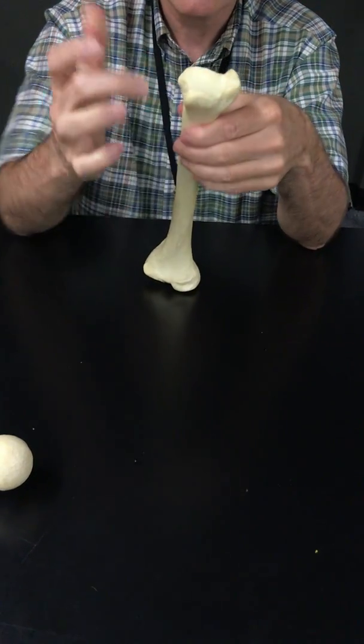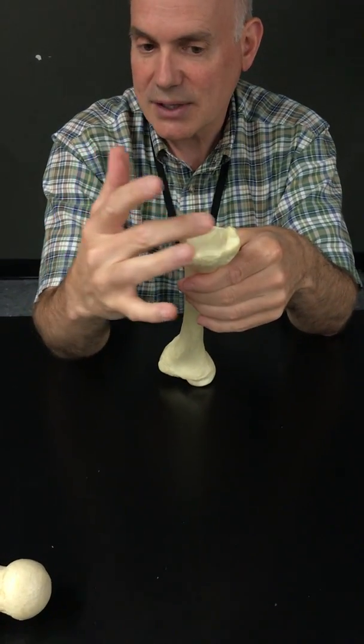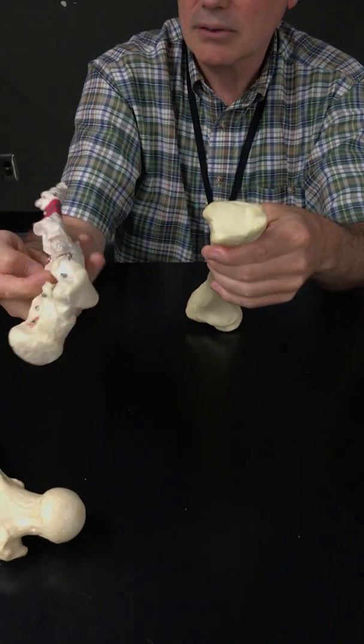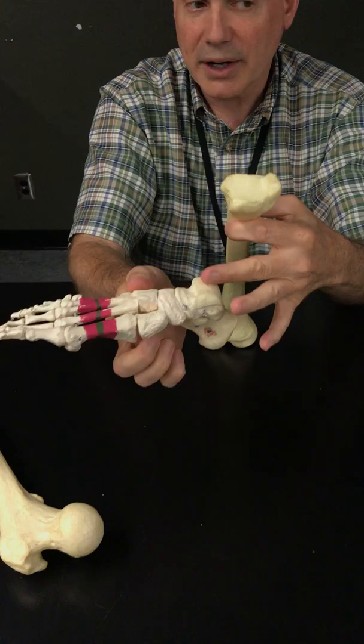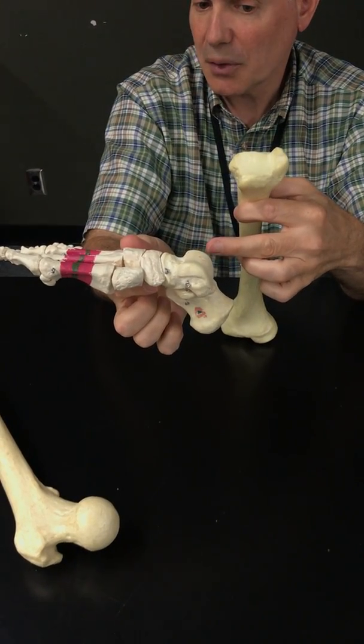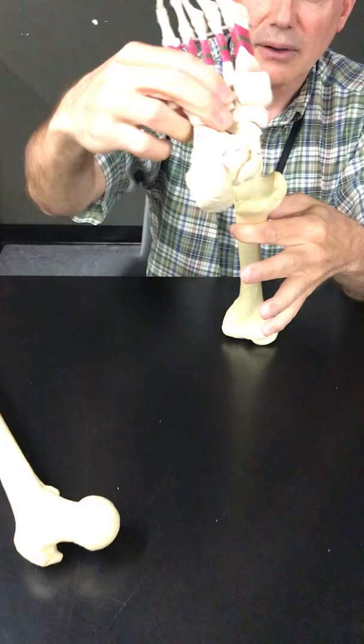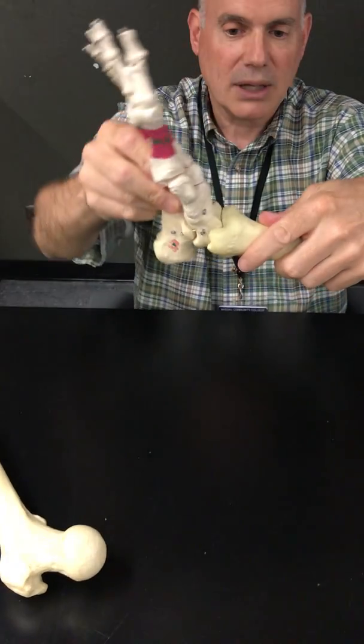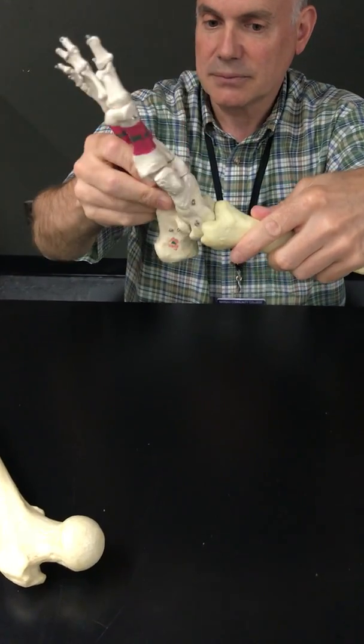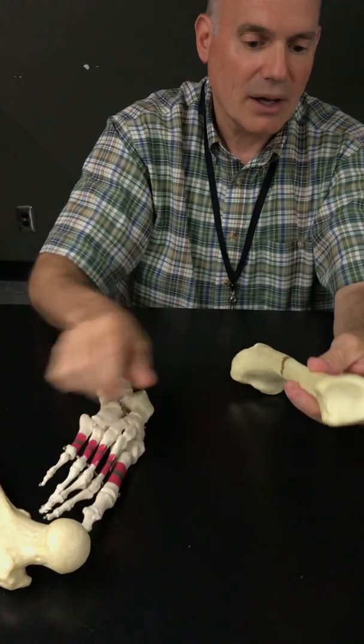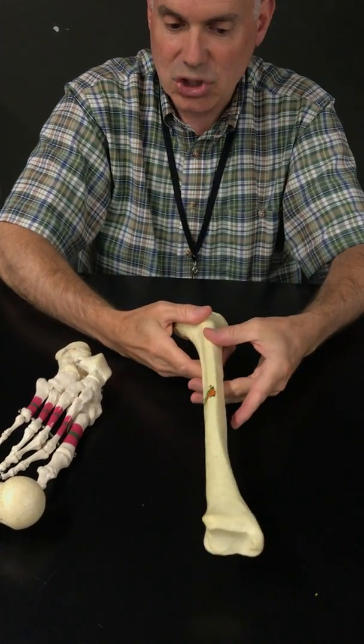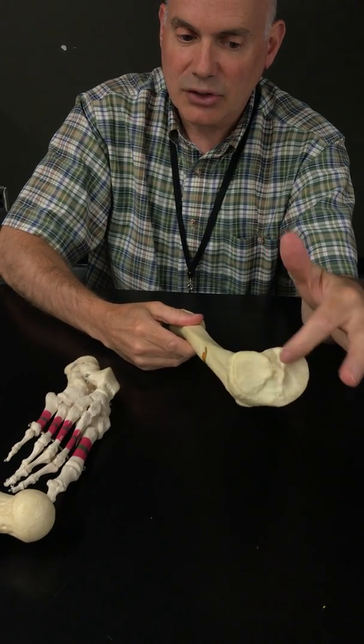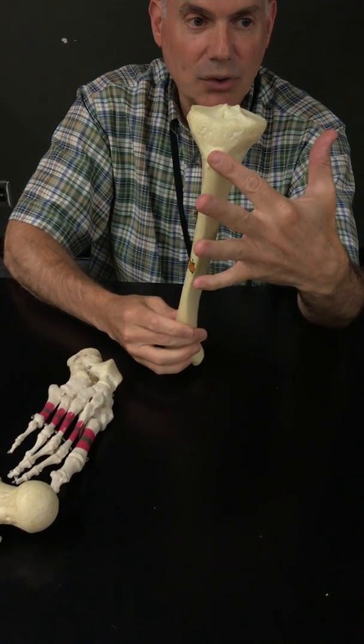Notice the talus - it's here within that surface and makes a beautiful hinge joint for the ankle. So we have the articular surface of the tibia, medial malleolus, shaft or diaphysis, medial condyle, lateral condyle, intercondylar eminence, and tibial tuberosity.